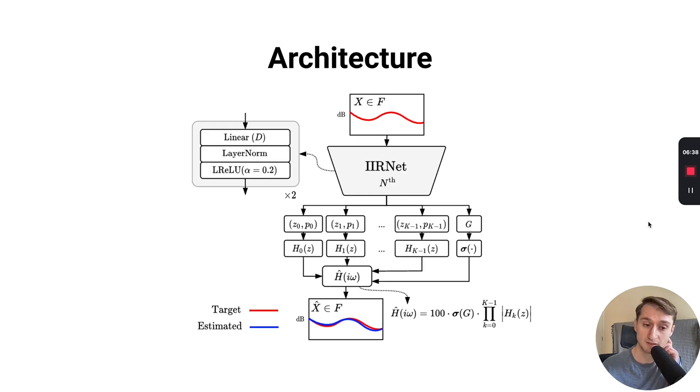Now back to the architecture real quick before we get into the experiments, just to provide a few more insights into what's happening there. As I said before, our neural network architecture is fairly straightforward, composed of a basic MLP with linear layers, layer norm, and a leaky ReLU activation function with a few layers stacked like that.